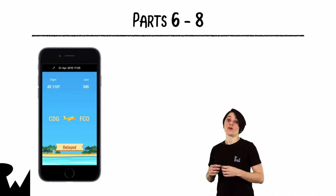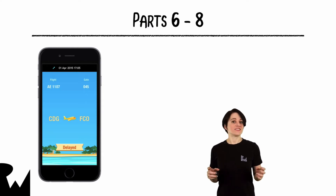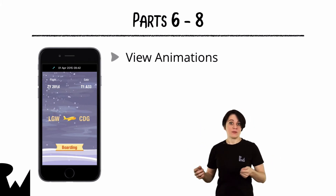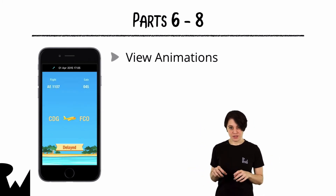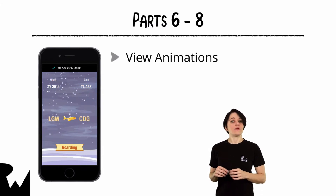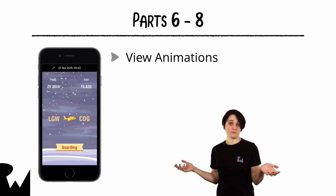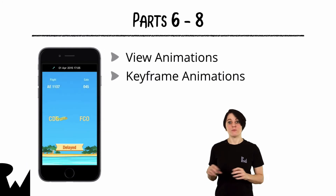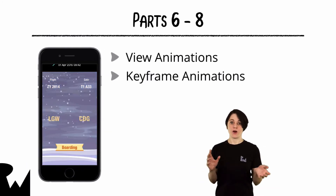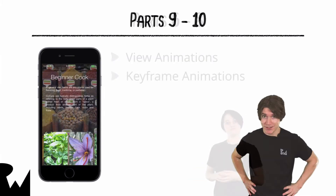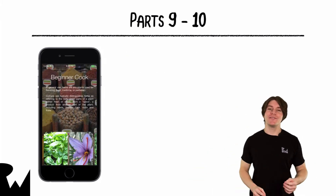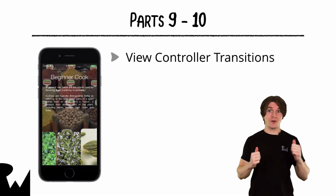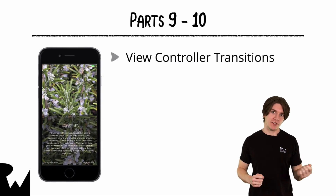In parts six through eight, you'll work in this flight info project. Parts six and seven will cover directly animating view properties. You'll learn when it may be useful to go over auto layout's head to animate the frame or center point of a view, and how to do so safely. We'll also show you the power of the transform property, allowing you to rotate, scale, and translate your views. You'll finish up this project in part seven with keyframe animations. Keyframes allow you to build multi-part animations and coordinate the animation of different properties to create complex effects. To finish the course up with a bang, parts nine and ten will show you how to add custom view controller transitions to this beginner cook app. By the end, you'll have a polished transition that's not only gorgeous, but also a clear illustration of the app's navigational structure.